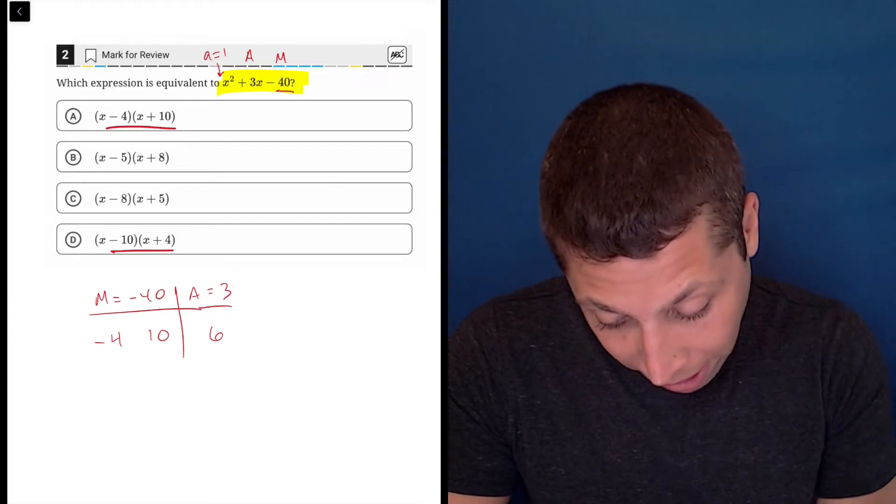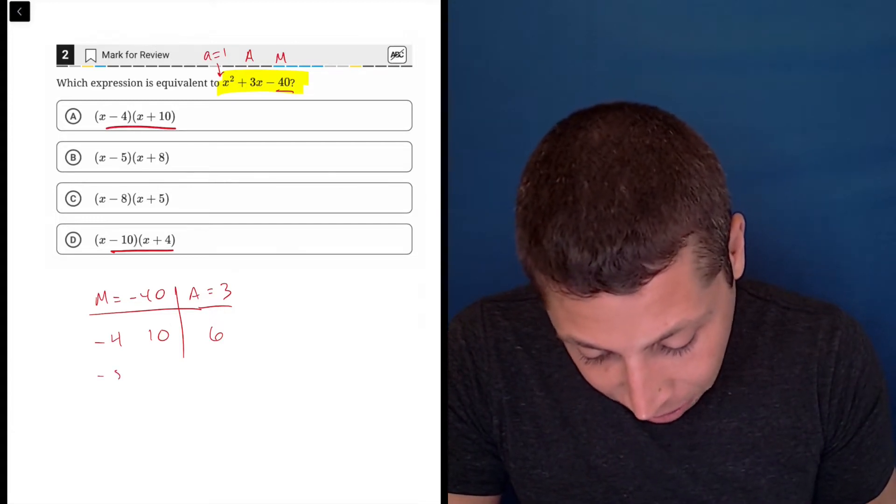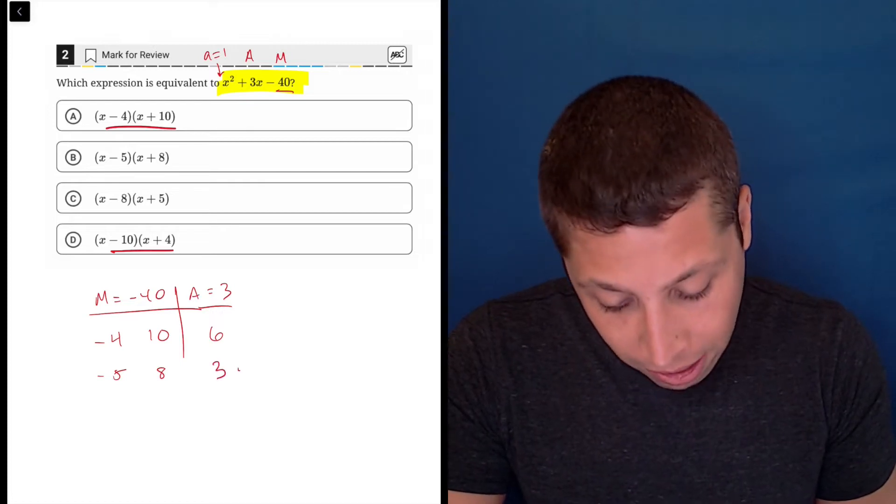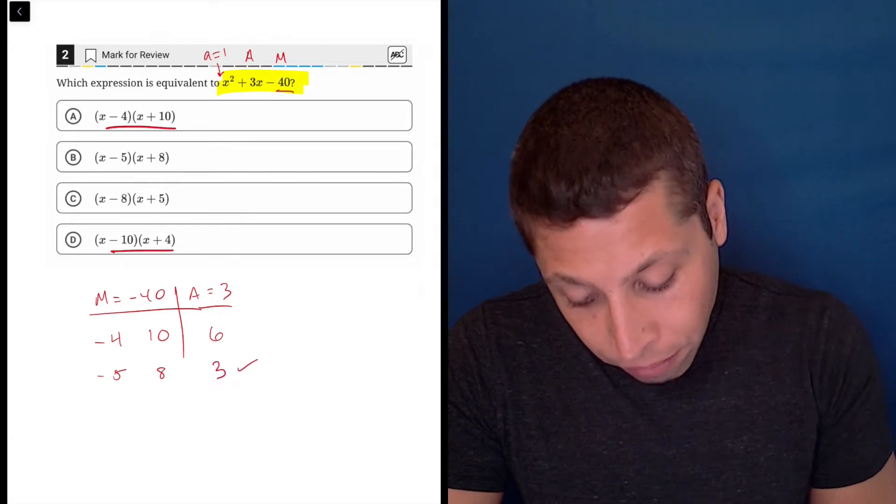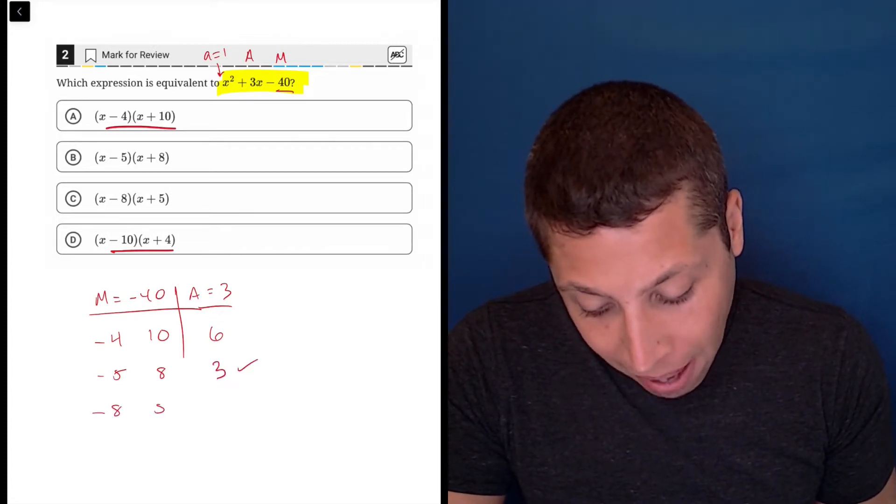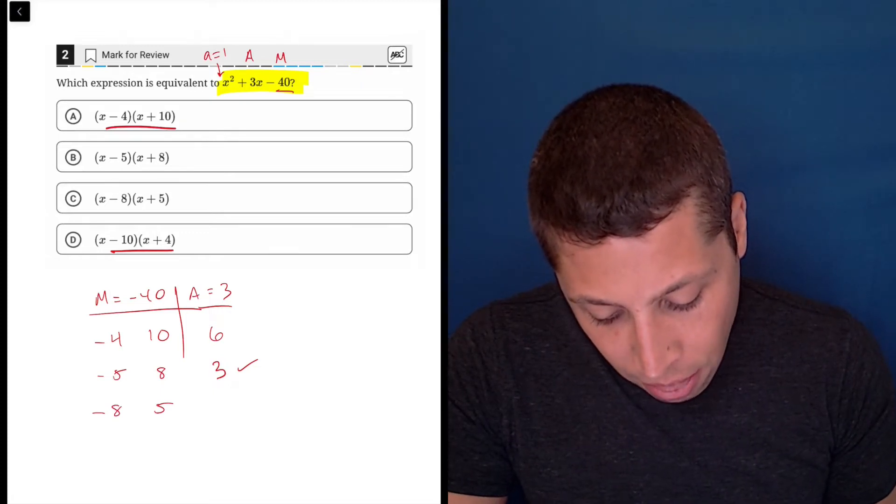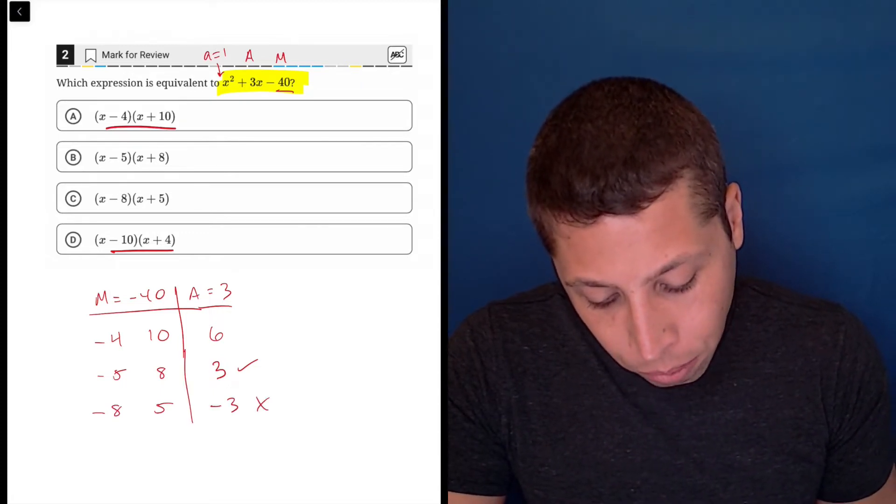So let's use the choices. Let's try negative five and eight. So negative five and eight, eight minus five is three, so that works. And just to see if we flipped it and we had negative eight and positive five, like choice C, that would give us negative three, which doesn't work.